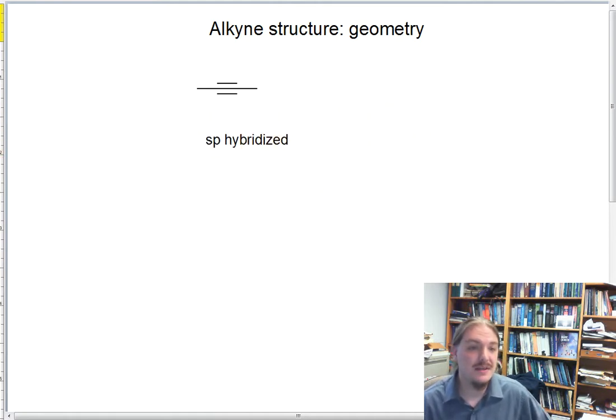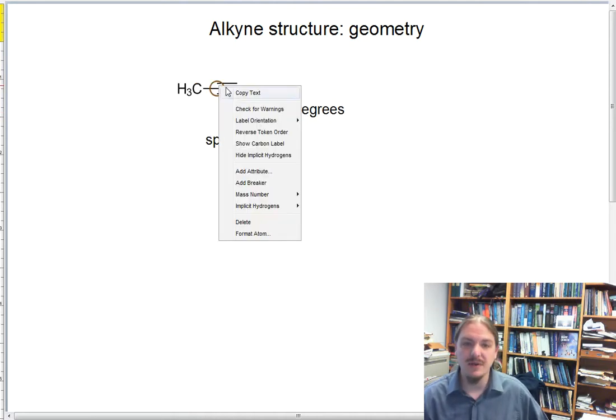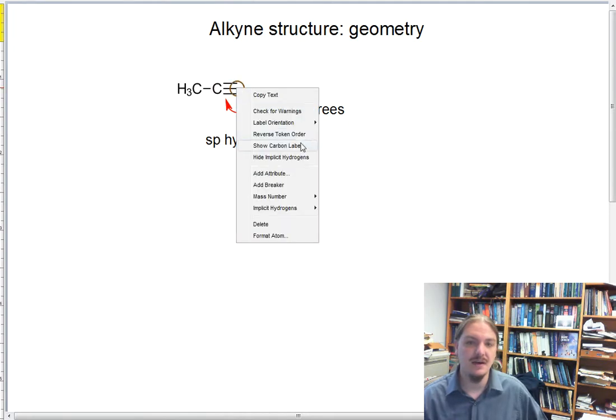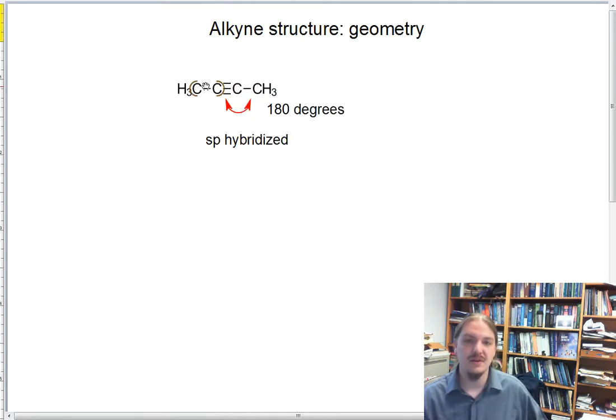Which means that the geometry around the alkyne carbons is 180 degrees. For this reason, we draw the chain of carbon atoms in an alkyne to represent the linear geometry.